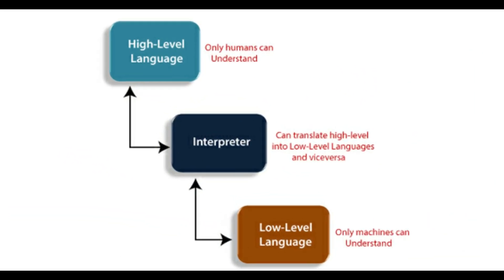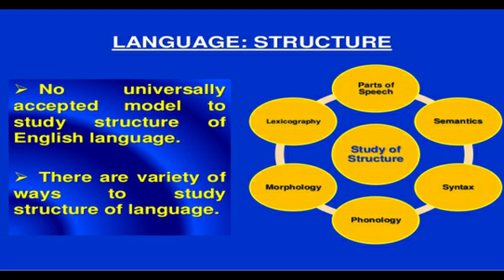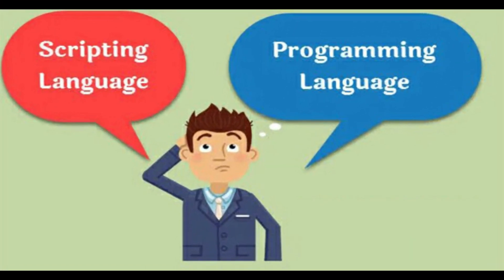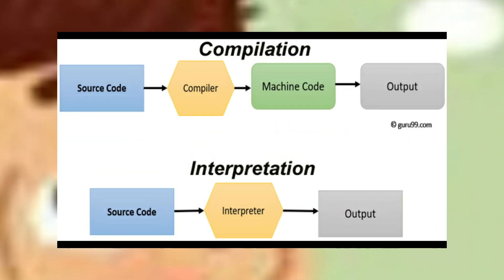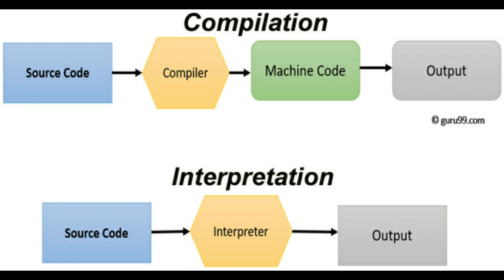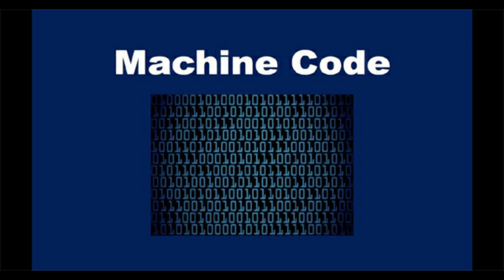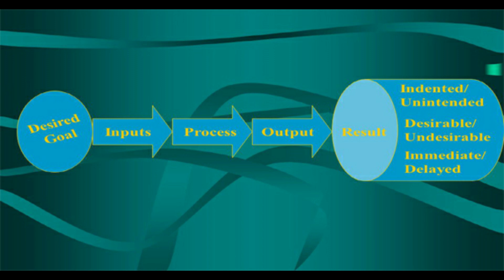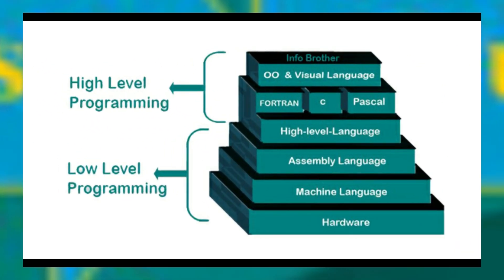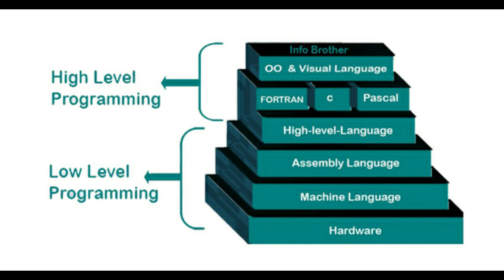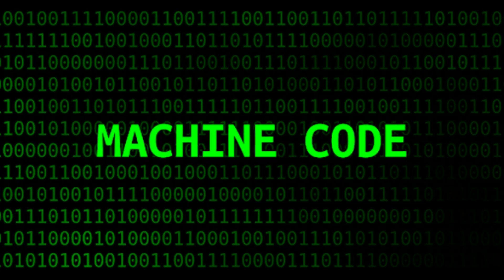Both programming and scripting languages are high level languages used to instruct a machine. The question is: if both are used for the same purpose, why do we have two different names? As far as language structure is concerned, they are both the same — in fact, we can say all scripting languages are programming languages. The major difference is that scripting languages do not require pre-compilation; rather, they are interpreted. A compiler takes the complete source file at once and converts it into machine code with a final executable, which is platform dependent. An interpreter does the same thing — compiling high level language to machine language — but it does it line by line at runtime, converting each statement to corresponding machine code which is then executed to produce output.